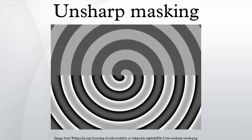Unsharp masking is an image sharpening technique, often available in digital image processing software. The 'unsharp' of the name derives from the fact that the technique uses a blurred, or unsharp, positive image to create a mask of the original image. The unsharp mask is then combined with the negative image, creating an image that is less blurry than the original. The resulting image, although clearer, may be a less accurate representation of the image's subject. In the context of signal processing, an unsharp mask is generally a linear or nonlinear filter that amplifies the high-frequency components of a signal.